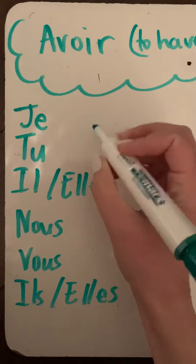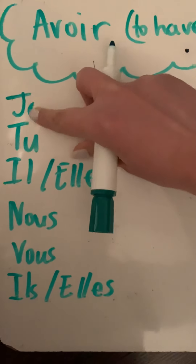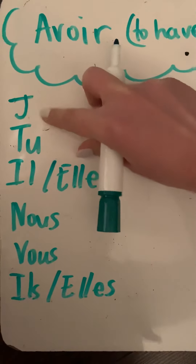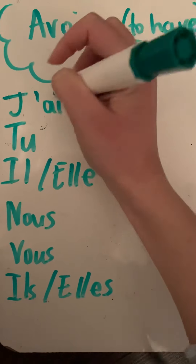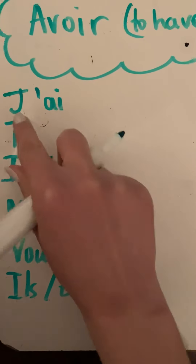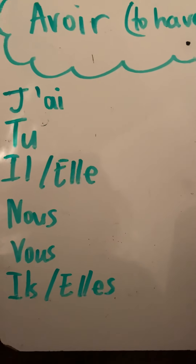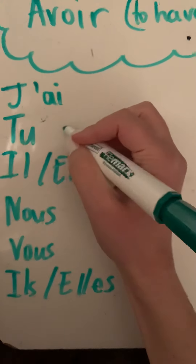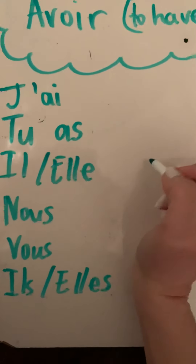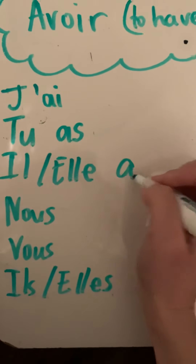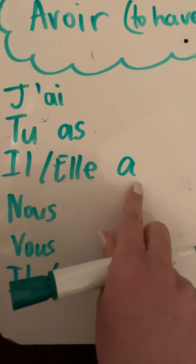So je becomes j'ai — we're going to take off the e. If you want to say 'I have,' you say j'ai. For example: j'ai un frère, j'ai une sœur. Tu as means 'you have.' Il a, or elle a — he has, she has.